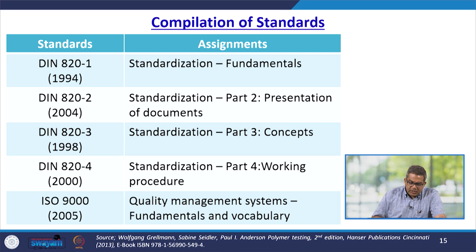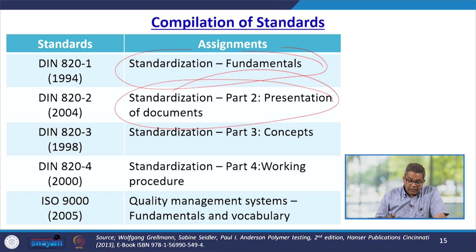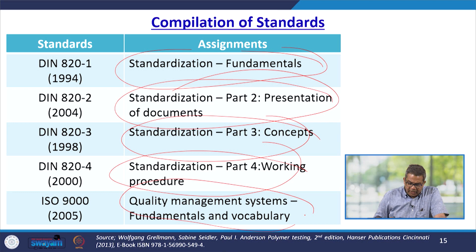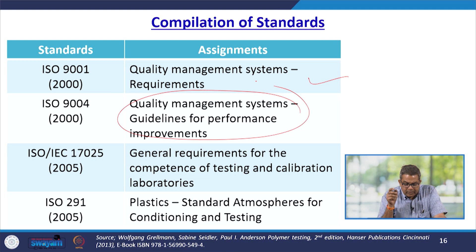Here is a compilation of various standards: DIN 8201-1994 covers standardization fundamentals; another standard covers presentation of documents; then concepts and working stock; ISO 9000 covers quality management system fundamentals and vocabulary; ISO 9001 covers quality management system requirements; and ISO 9004 represents the quality management system guidelines for performance improvement.